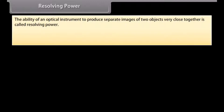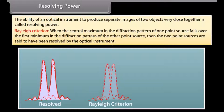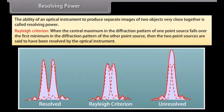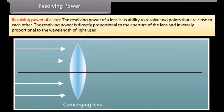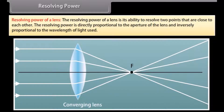The ability of an optical instrument to produce separate images of two objects very close together is called resolving power. Rayleigh's criterion states that when the central maximum of one point source falls over the first minimum of the other, the two sources are said to be resolved. The resolving power of a lens is its ability to resolve two close points; it is directly proportional to the aperture and inversely proportional to the wavelength of light used.